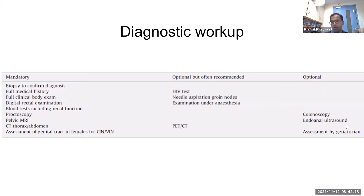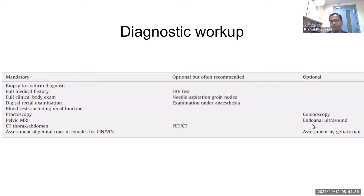Optional but recommended investigations include HIV test, needle aspiration of groin nodes, examination under anesthesia, and PET-CT scan. PET-CT can upgrade nodal disease in about 20 percent of patients and change management in 4 to 5 percent. Colonoscopy is optional and debated — some guidelines suggest up to 15 percent may have concomitant GI malignancy, while others find no role. Endoanal ultrasound can be done if pelvic MRI is unavailable, and geriatric assessment is advised given median age over 60 years.